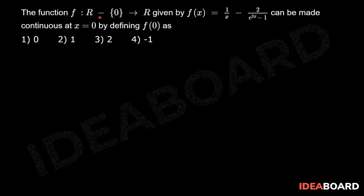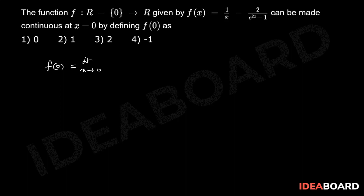The function f is mapping from R minus set {0} to R, given by f(x) = 1/x - 2/(e^(2x) - 1). This can be made continuous at x = 0 by defining f(0) as the limit as x tends to 0 of f(x).